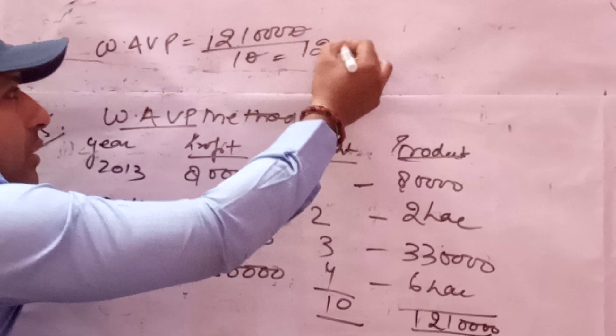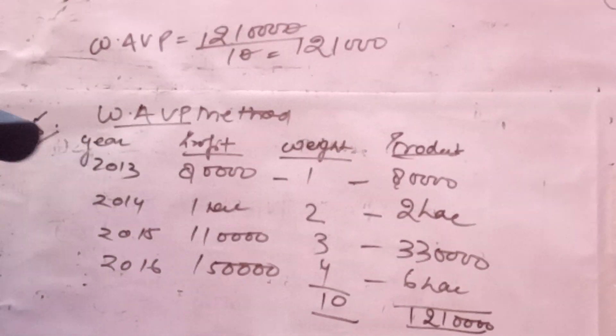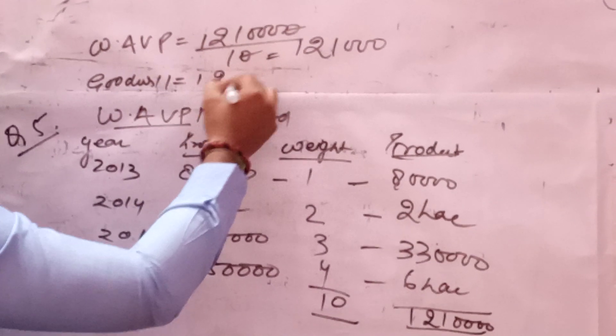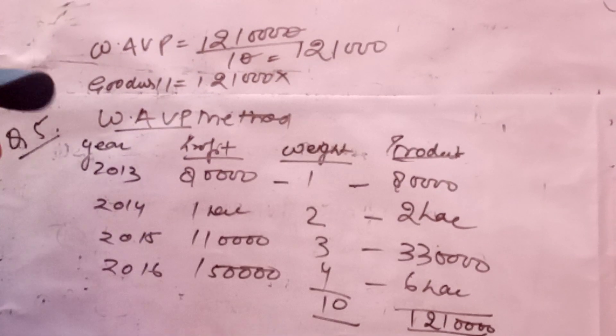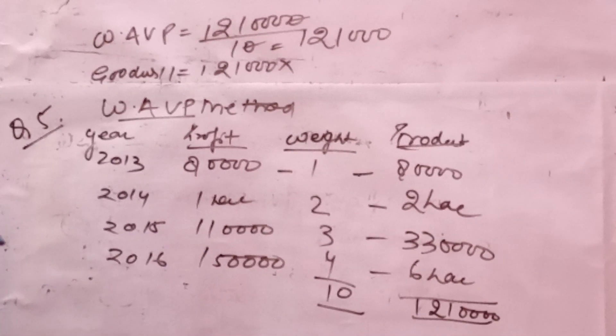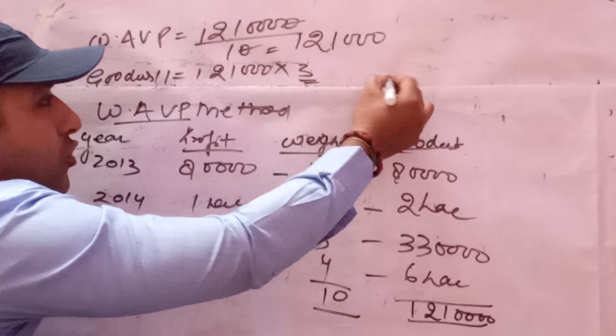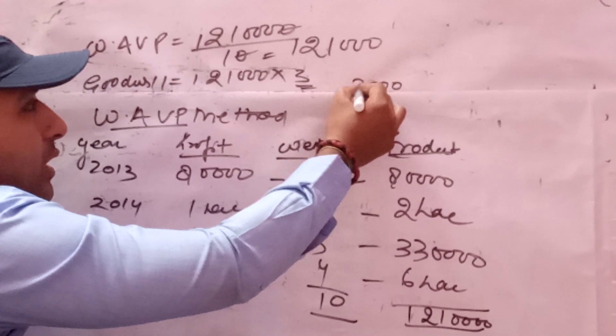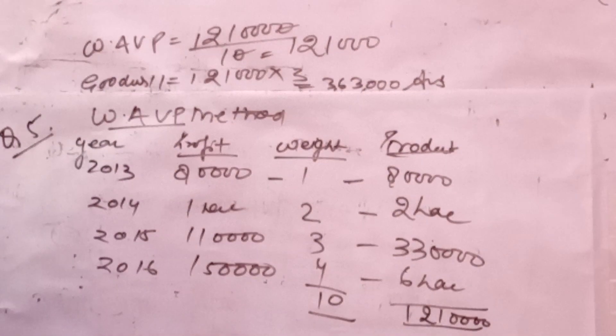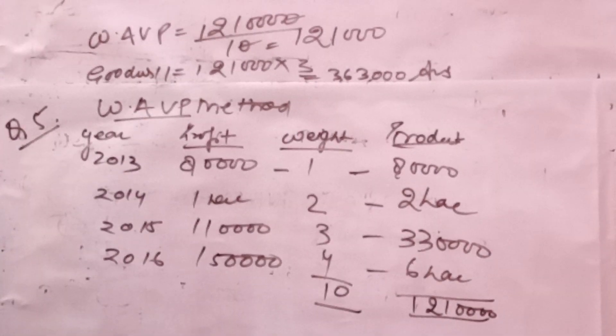Goodwill equals 1,28,000 into number of purchase years. Number of purchase years in the question is 3 years purchase. The answer will be 3 times 1,28,000 equals 3,84,000 rupees. Answer: 3,84,000. Thank you.